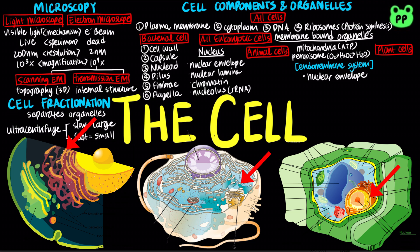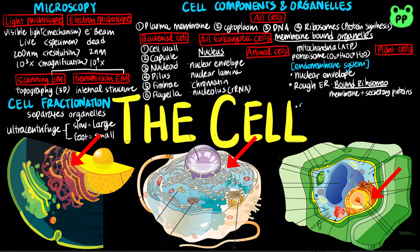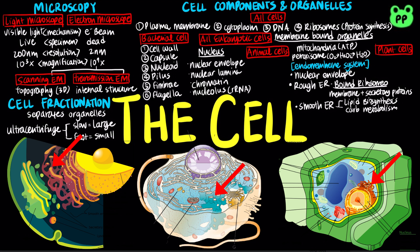The ER contains two distinct regions. Rough ER contains bound ribosomes, which produce membrane and secretory proteins, whereas the smooth ER lacks ribosomes and functions in lipid biosynthesis, carbohydrate metabolism, detoxification, and storage of calcium ions.